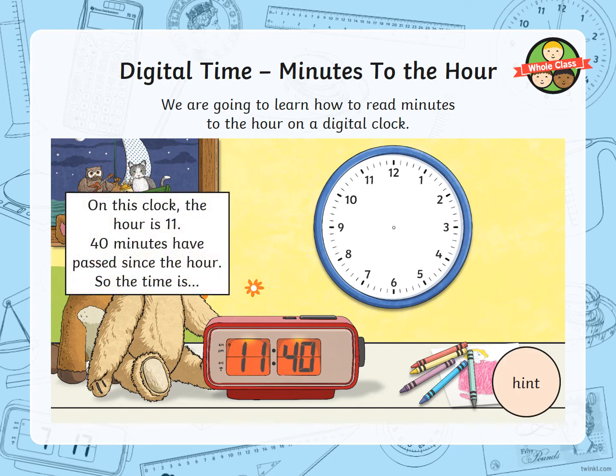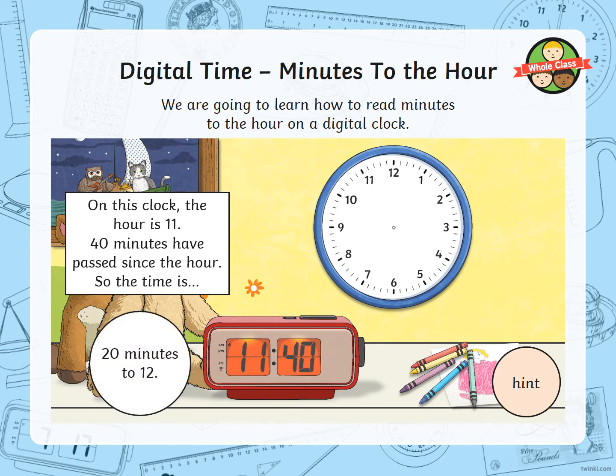On this clock, the hour is 11 and 40 minutes have passed since the hour, so we would say that there are 20 minutes to 12. We know it's 20 minutes because there are 60 minutes in one whole hour. So if it's at 40, we count up in 10s — 50, 60 — that's two 10s, and two 10s make 20 minutes.